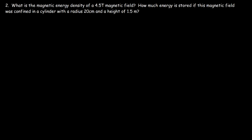Number two: what is the magnetic energy density of a 4.5 tesla magnetic field? Let's derive an equation to get that answer. We'll start with the potential energy stored in an inductor when a current flows through it, using a solenoid as our example.